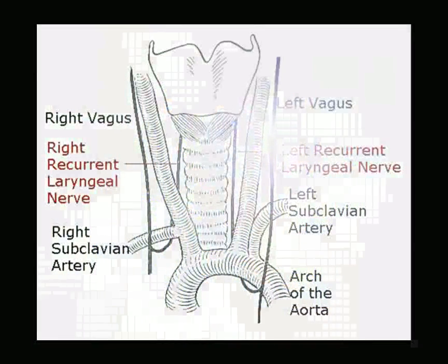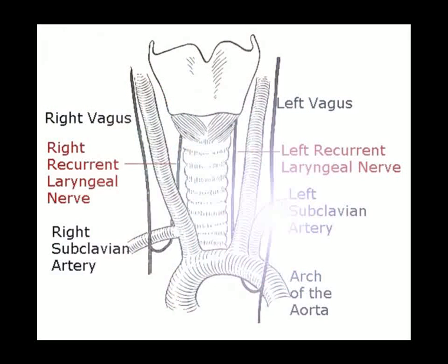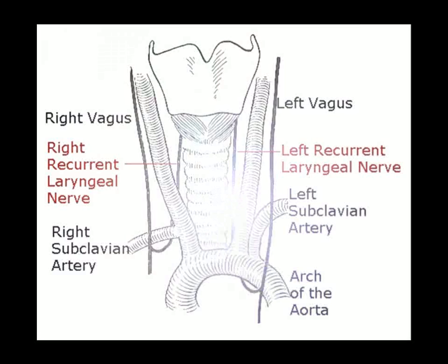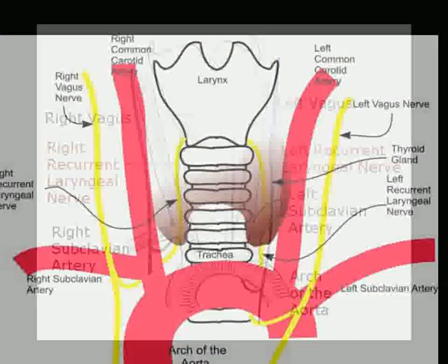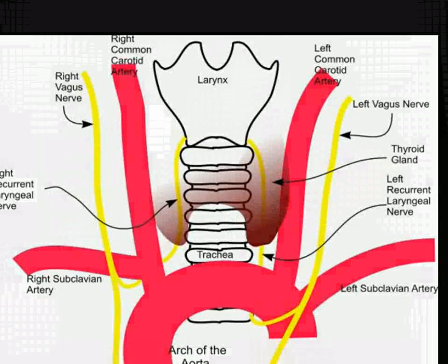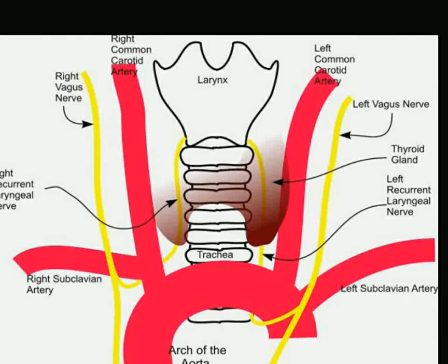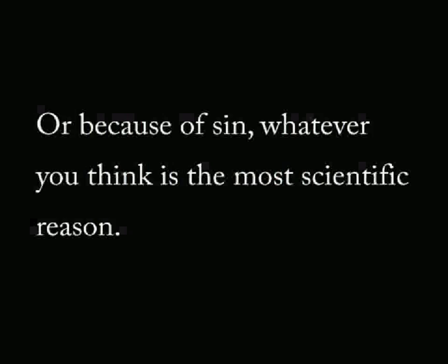Take a look at the recurrent laryngeal nerve. This is a nerve that comes off of the brainstem from the vagus nerve. It loops around, goes all the way down from the brain, loops around the arch of the aorta by the heart and the chest cavity, then goes all the way back up to the larynx — which is a several-foot detour. The much more obvious thing to do would be to have it go directly from the brainstem to the larynx. But because it develops a certain way, it can't do that.